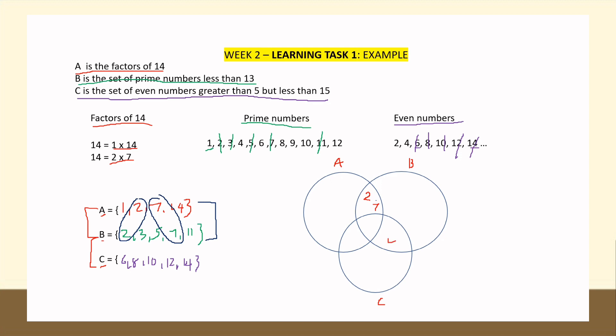We place 2 and 7 in the intersection of A and B. How about B and C — is there any common element? None, so leave it blank. How about A and C — is there any common element? Yes, we have 14, so we write 14 in the intersection of A and C.